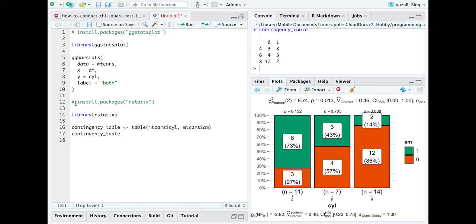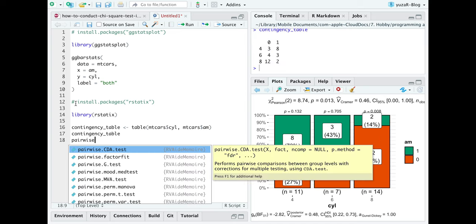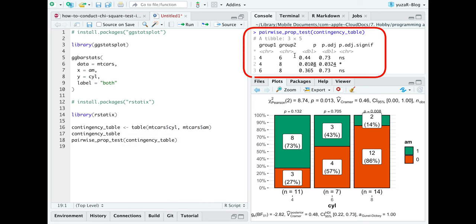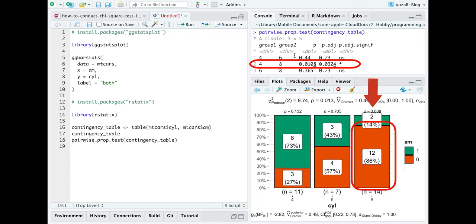And finally, simply apply pairwise.prop.test function to your contingency table. The results show two kinds of p-values: normal and adjusted for multiple comparisons. Always use the adjusted ones. So, we see that there is a significant association between cylinders 4 and 8, where cylinder 4 has more manual transmission, while cylinder 8 has more automatic transmission.